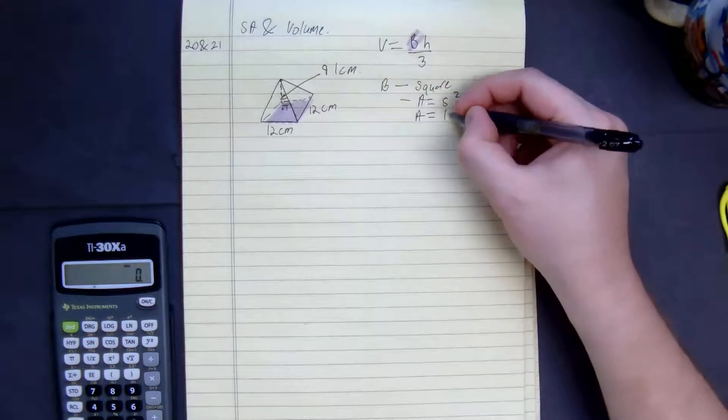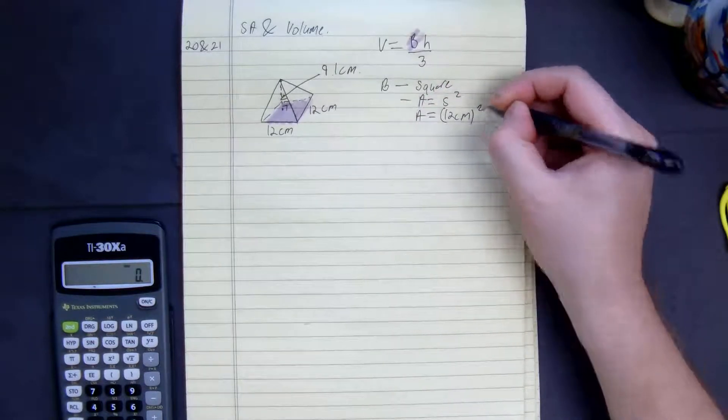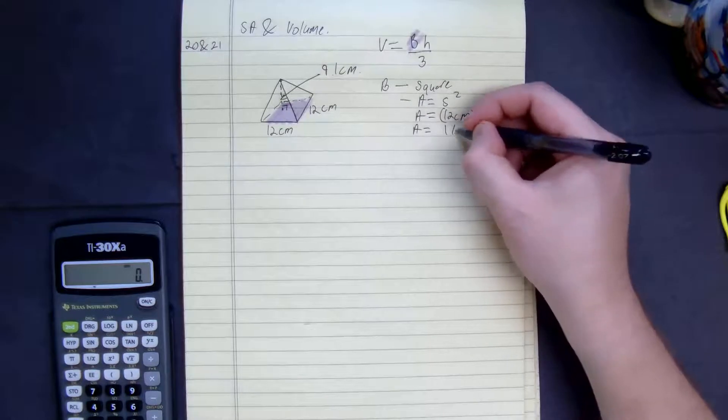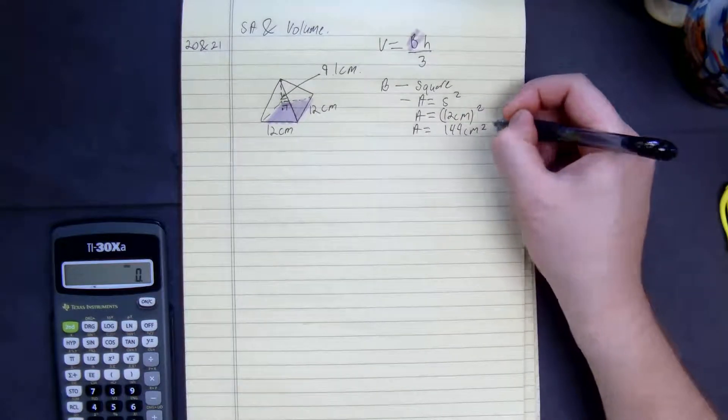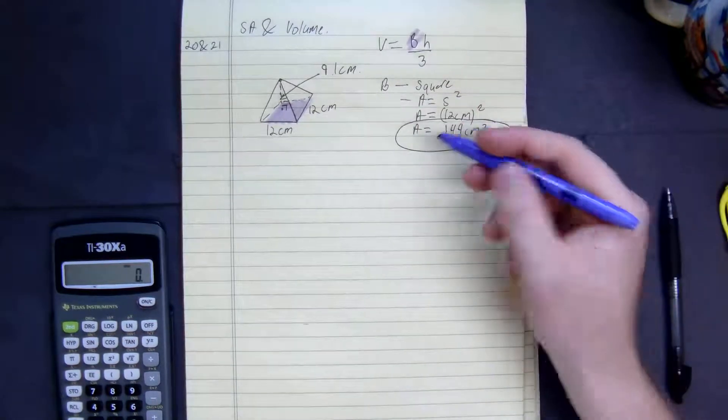Which we get area is equal to s squared. Area is equal to 12 centimeters squared. Area is equal to 144 centimeters squared. So that's our area.